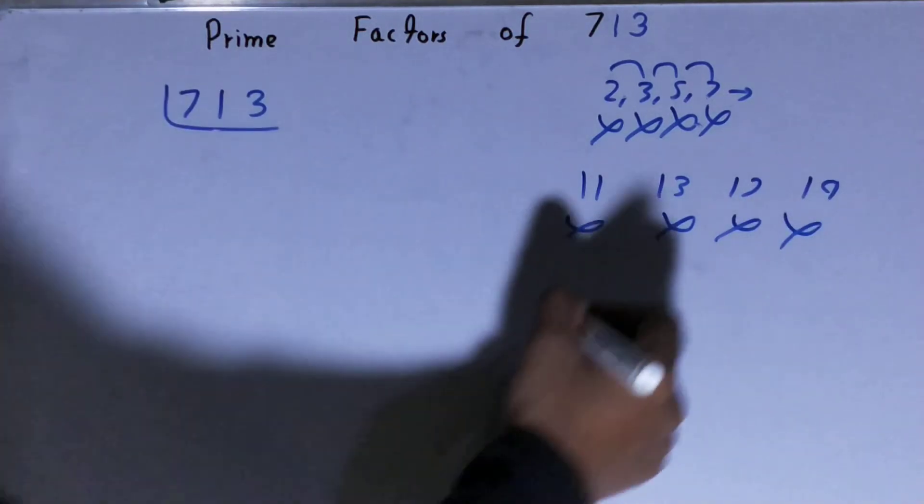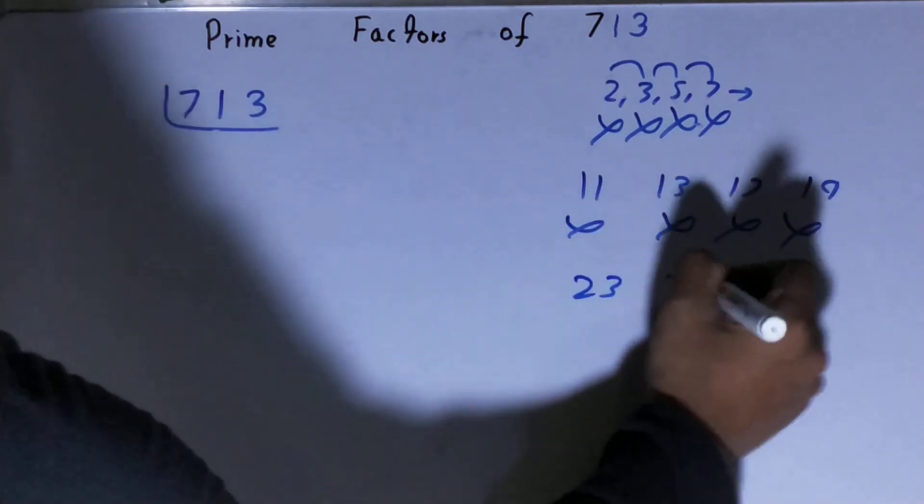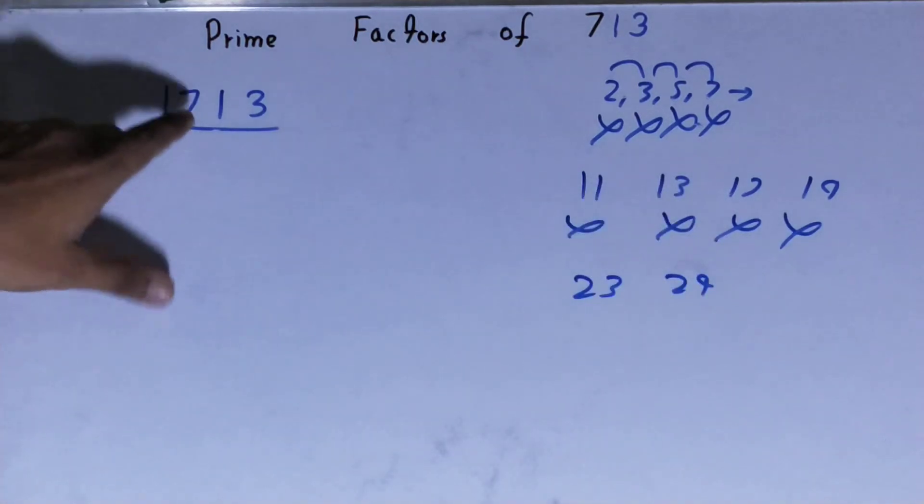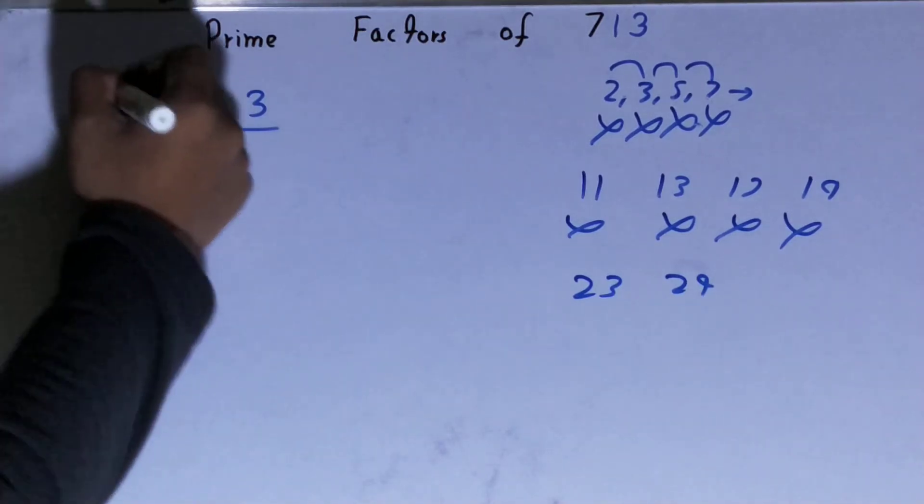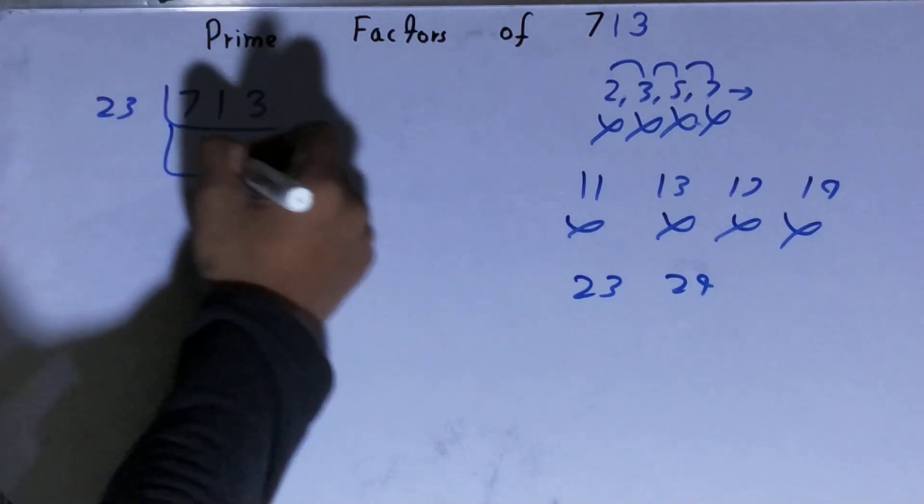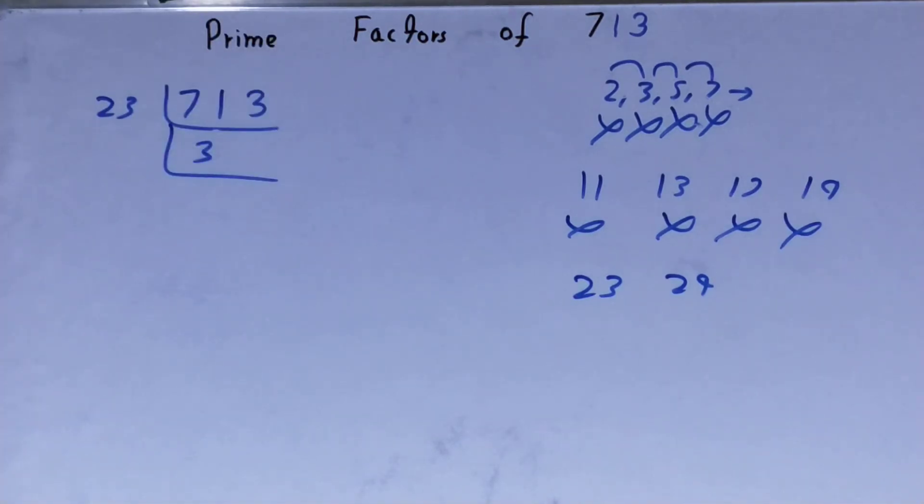Now let's check it with 23. 23 times 3 is 69, right. 23, 3, 69, 2, 3. Yes, it is divisible with 23. So divide it: 23 times 3 is 69, 2, 3. And 31 is further not divisible by 23 because 31 is itself prime.